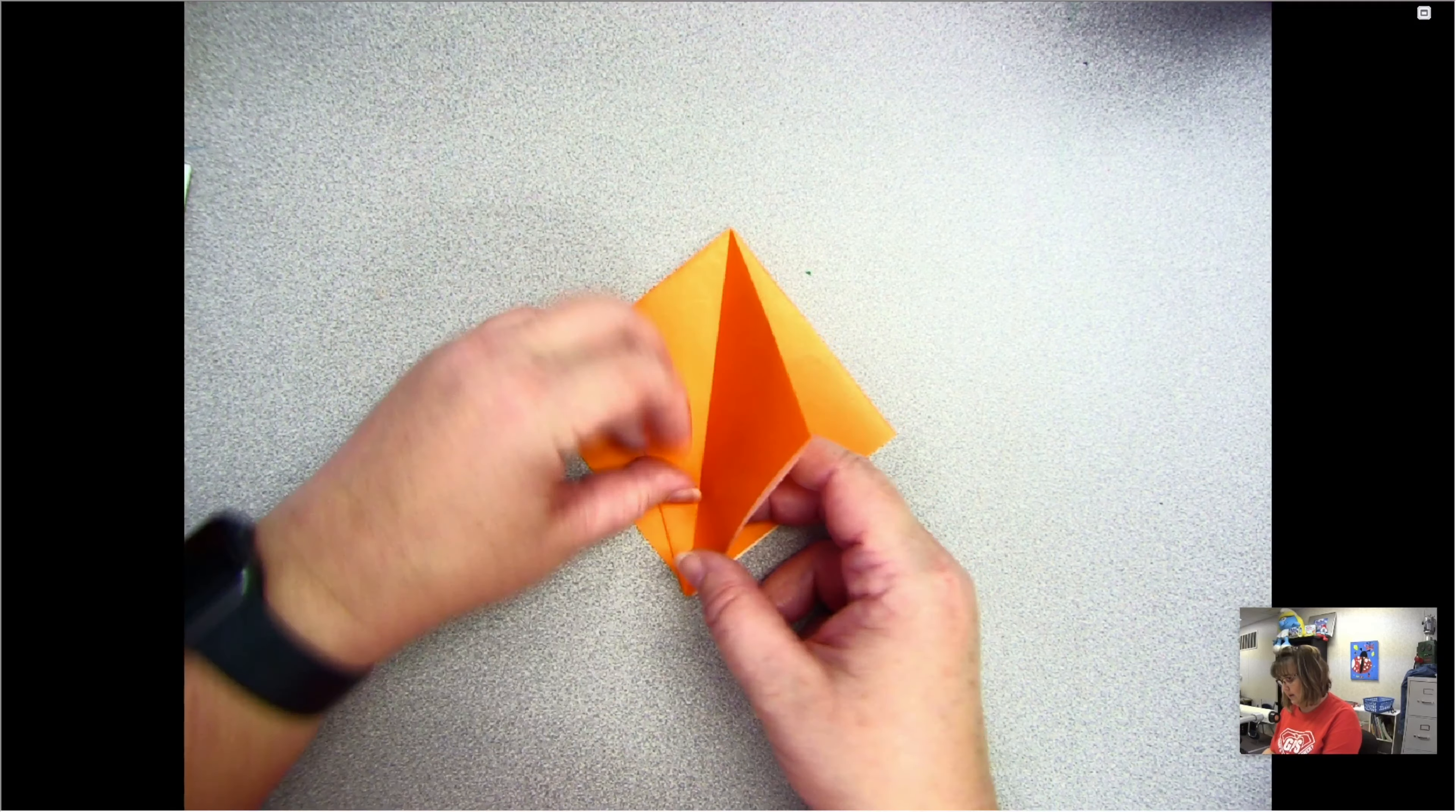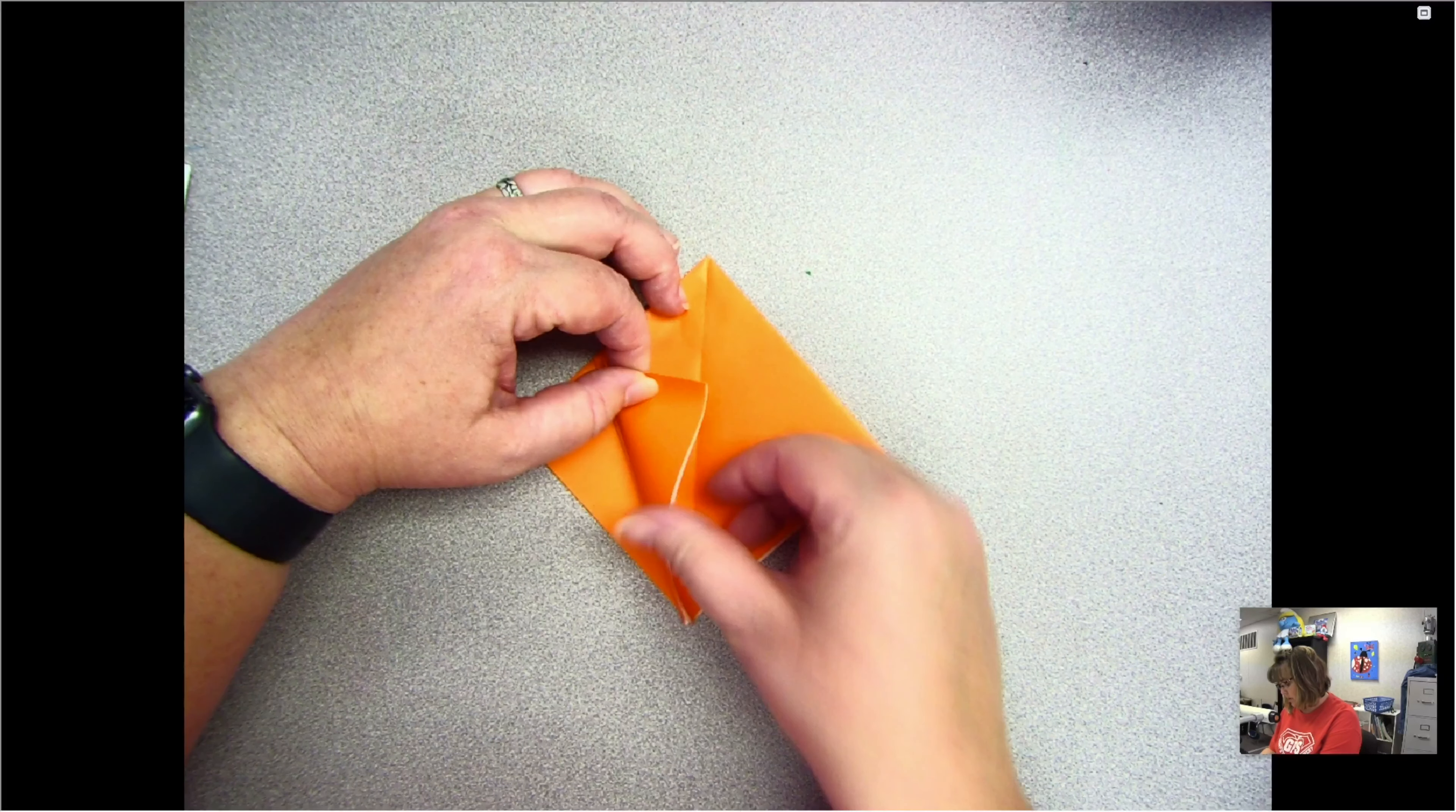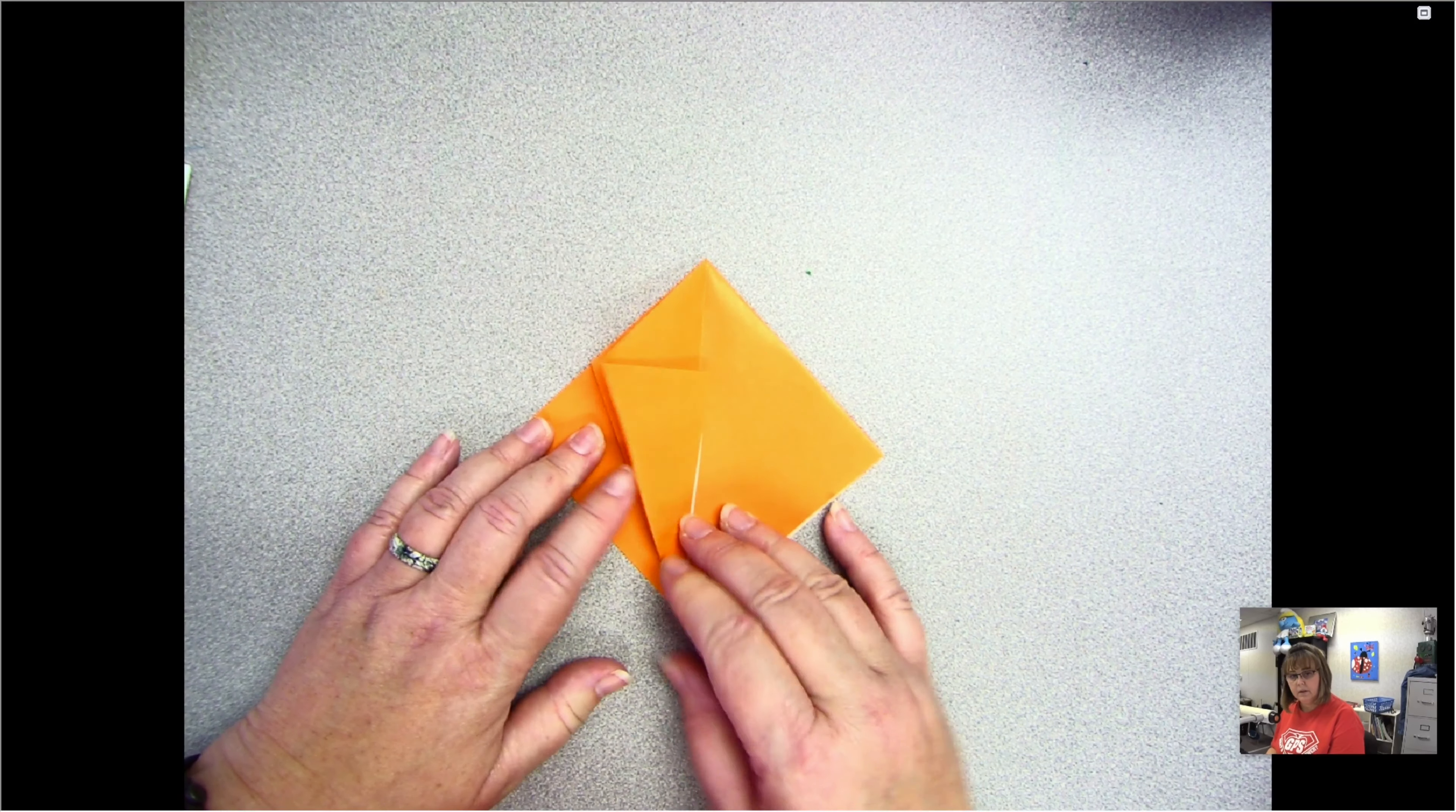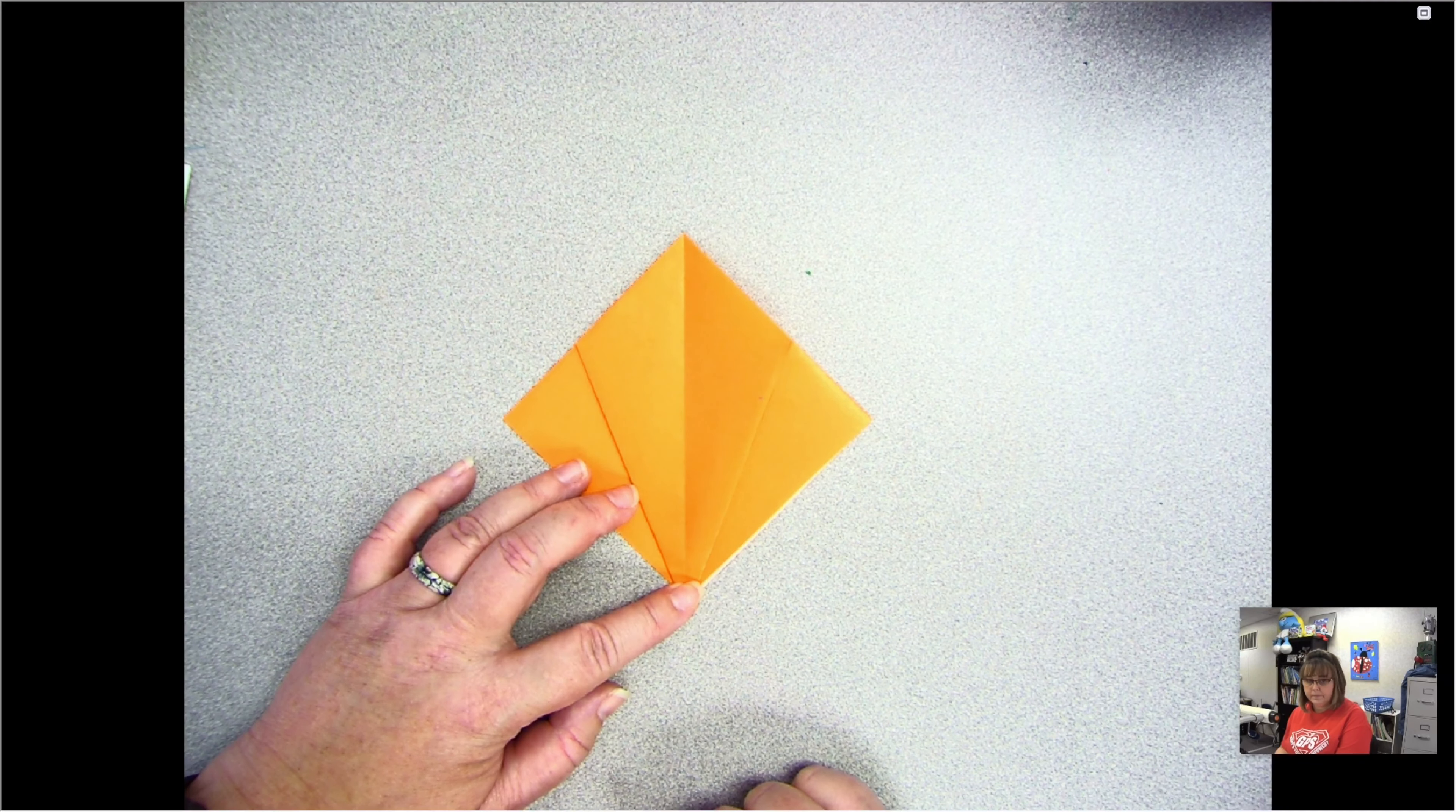Now I'm going to take this side and do the same thing, except I'm pulling it behind. So I'm going to fold it over, take this corner, fold it to here, line it up. So that again, when I put it back down, that's what it looks like.